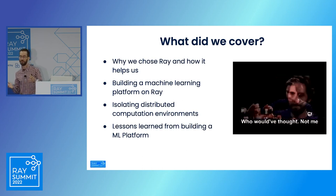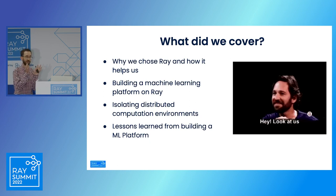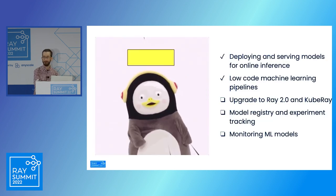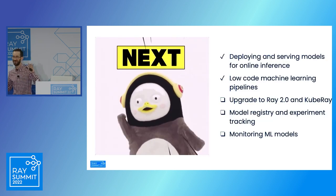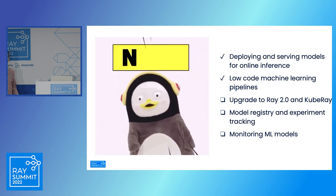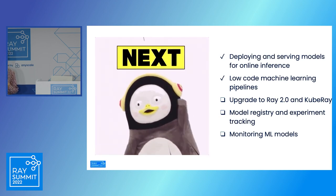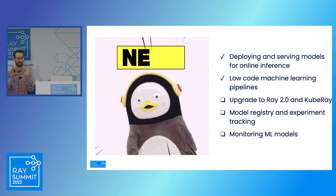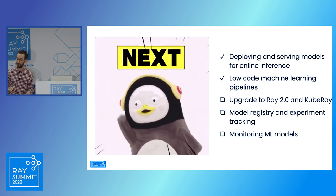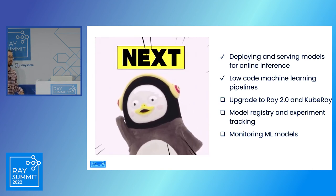To summarize what we covered: we talked about Ray, how we built a machine learning platform on top of Ray, how we isolate distributed computation environments, and the lessons learned from building a machine learning platform for the third time. But the journey is not over. We recently added the ability to deploy and serve ML models for online inference and real-time predictions, and a low-code framework for ML pipelines. In the future, we plan to upgrade to Ray 2.0 and KubeRay, add a model registry for experiment tracking, and have a standard for monitoring ML models in production.